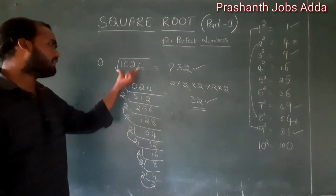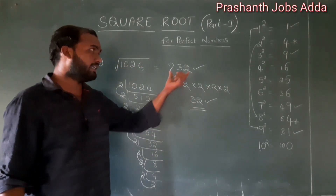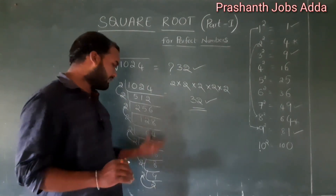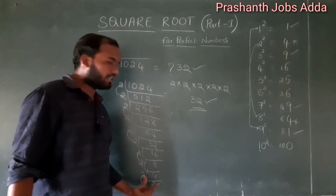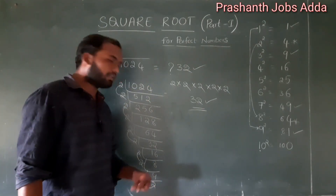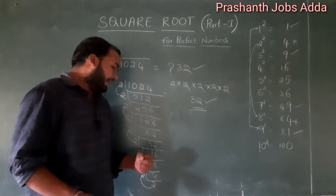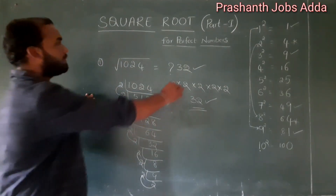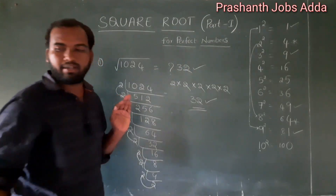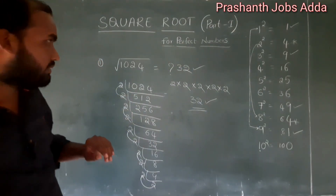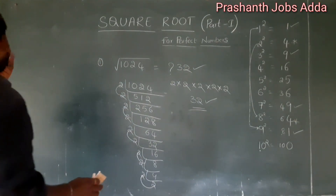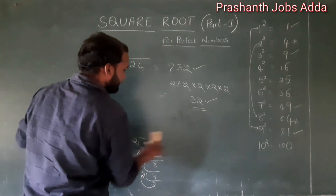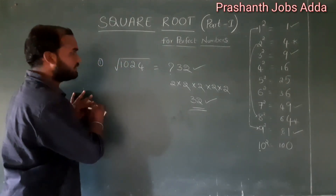So the first method gives answer 32. This LCM method is simple for small numbers, but some numbers are complex. The next method is the division method. Division method is also useful and gives the same answer of 32.